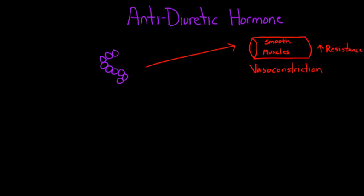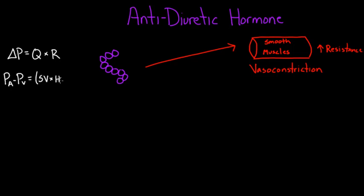There's that formula: ΔP equals flow Q times resistance R. You can rearrange it to say arterial pressure minus venous pressure equals stroke volume times heart rate, all multiplied by resistance. If we assume venous pressure is basically unchanged, then anything that increases resistance is going to increase our pressure. So if ADH causes constriction of the blood vessels and increases resistance, our pressure would go up as well.